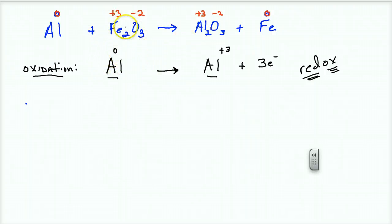Next one. Who else is changing? Well, look at this. Iron plus three is going to iron zero. And how does a plus three become a zero? Well, it must have gained electrons. And how many? Three. And I like to write my electrons as three negative e. It's a designation that most people use.